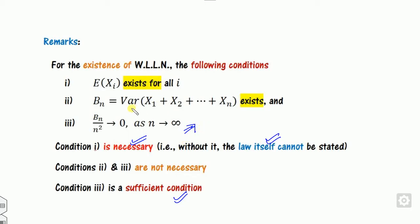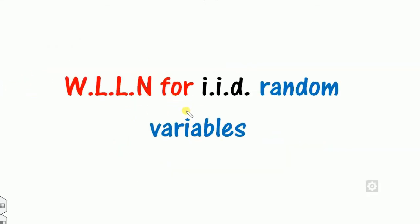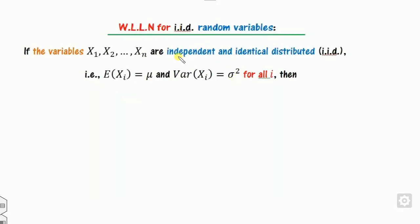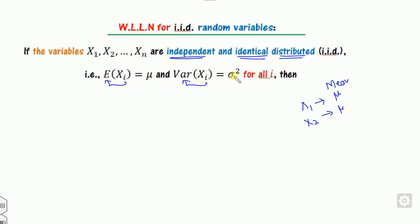Now, to check whether the weak law of large numbers holds, we first check whether the variables are IID — independent and identically distributed. IID means: if the mean of x_1 is mu, then the mean of x_2 is also mu; that is, the means and variances are the same for each random variable.